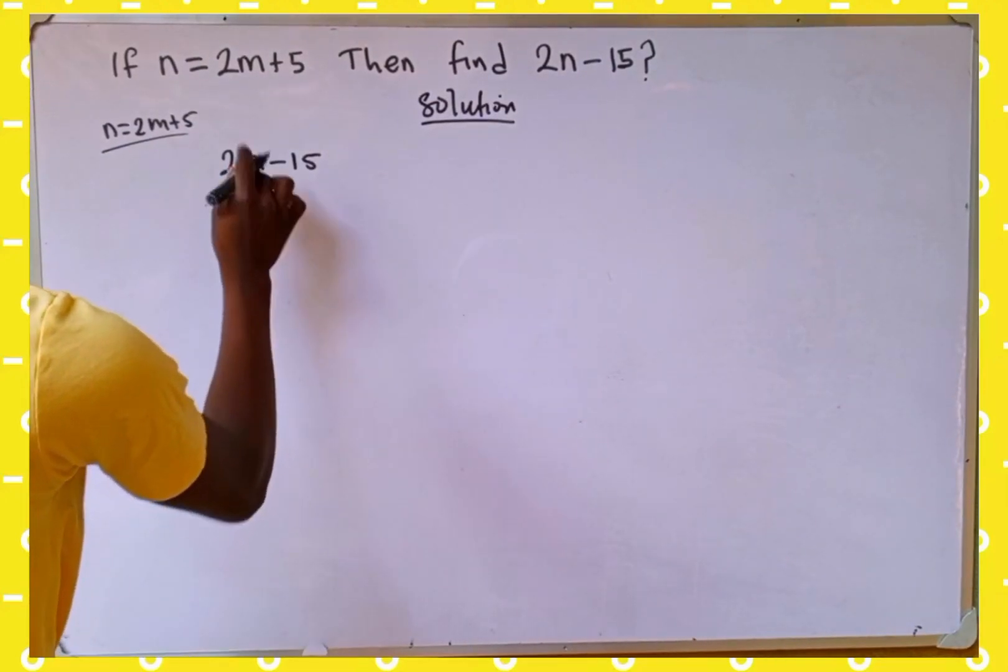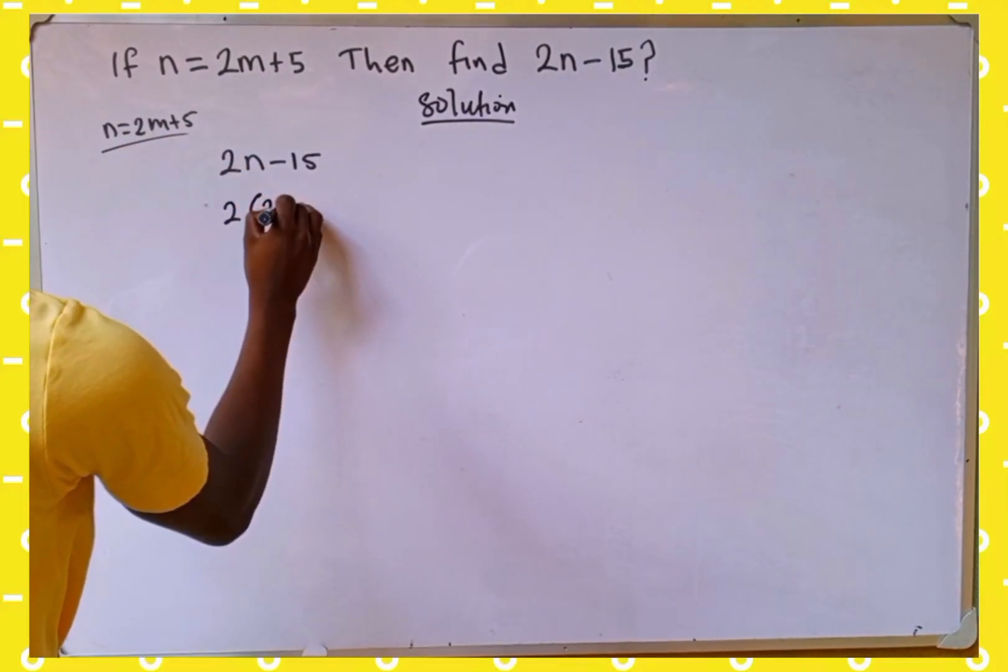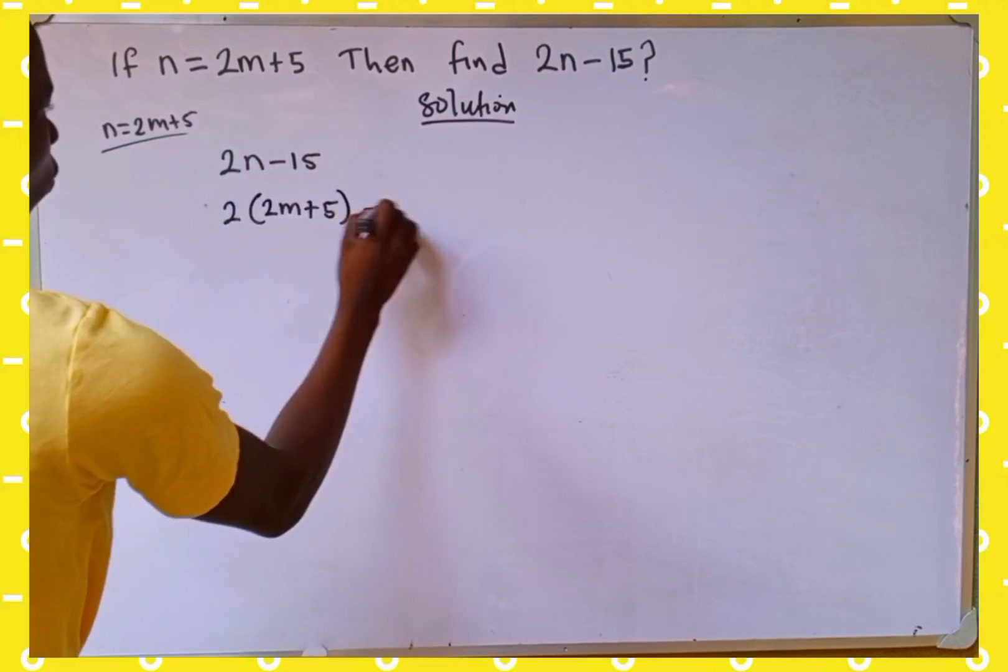So we are going to write 2, then in place of n is going to be 2m plus 5, then we take away 15.